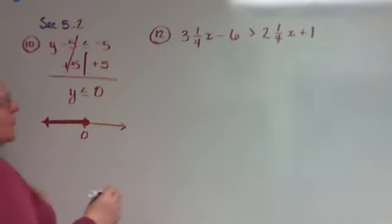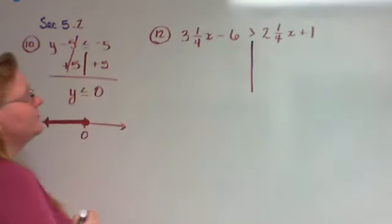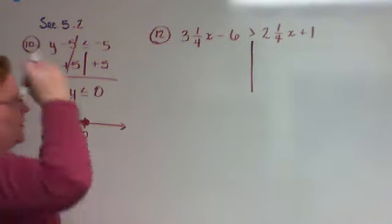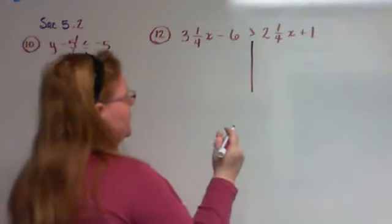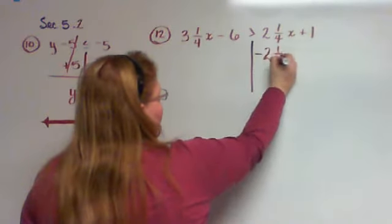Draw your line just like normal. So here I'm going to draw my line just like normal. First thing I'm supposed to do is move my letters. Because I don't have any, I do have some fractions I could get rid of, but I think I'm getting ready to take care of them when I move my letters, so I'm not going to stress it. When I move my letters, I subtract 2¼x.